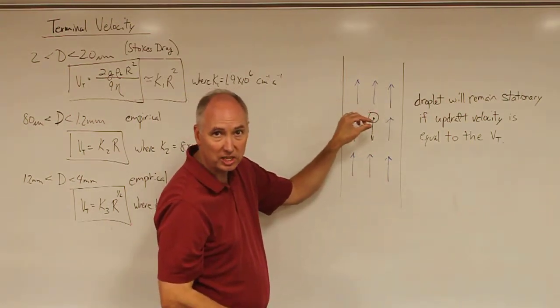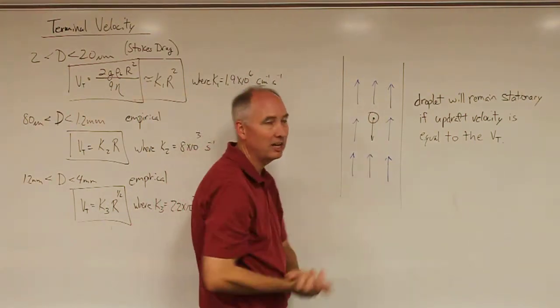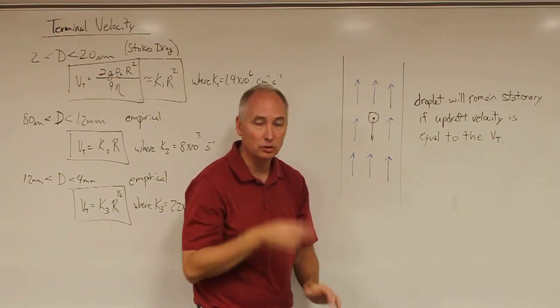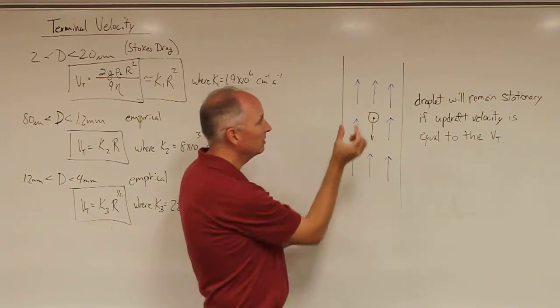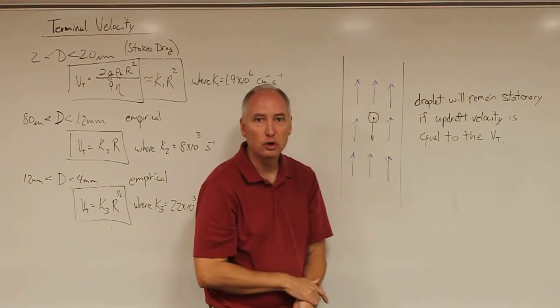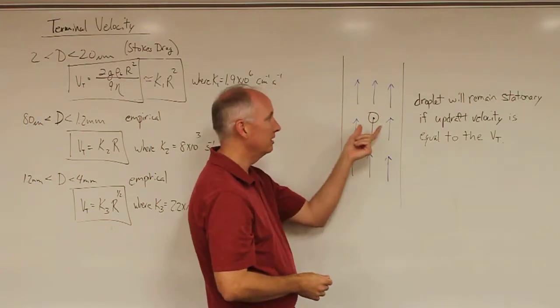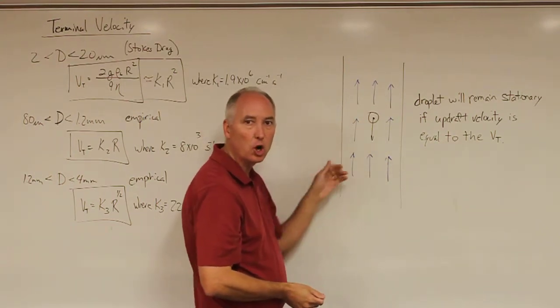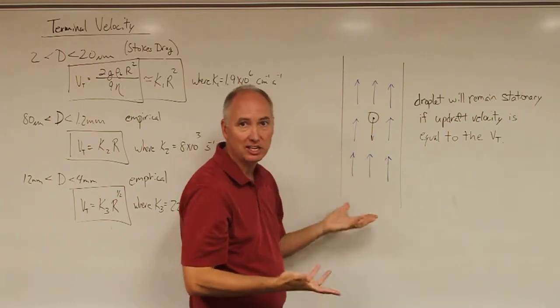You can optically take a picture of this droplet and figure out what its radius is, and you know what the updraft velocity is. In that case, that defines the terminal fall speed for a droplet with that radius.